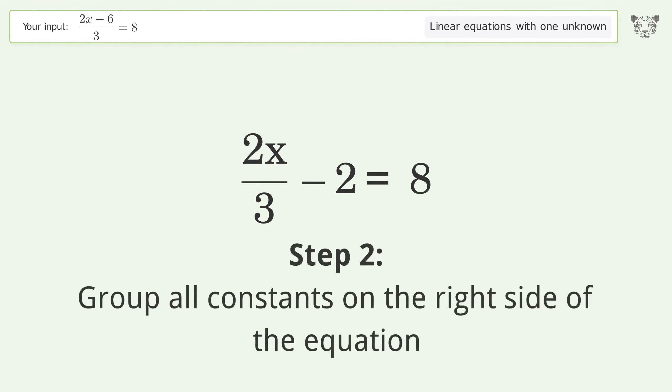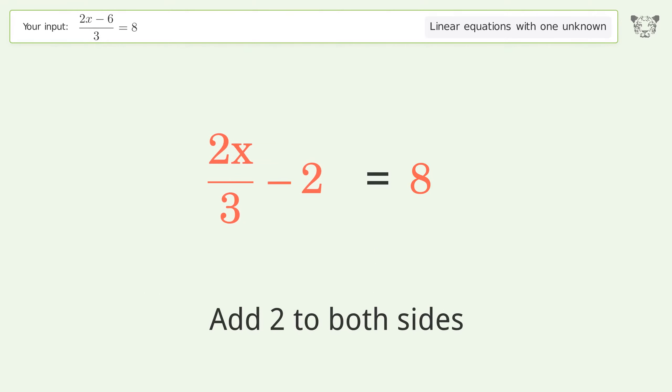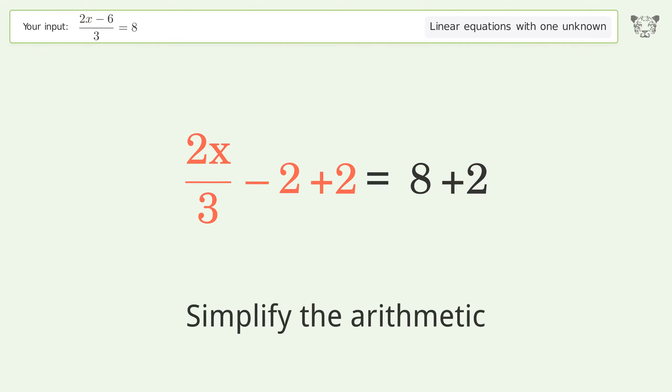Group all constants on the right side of the equation. Add 2 to both sides. Simplify the arithmetic.